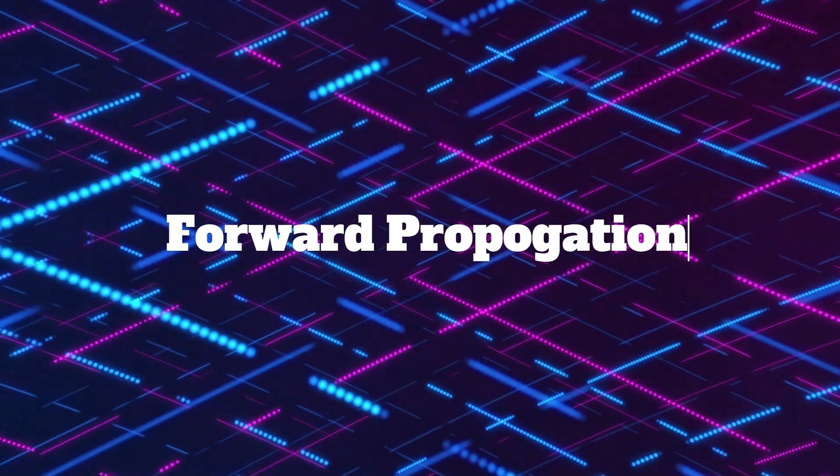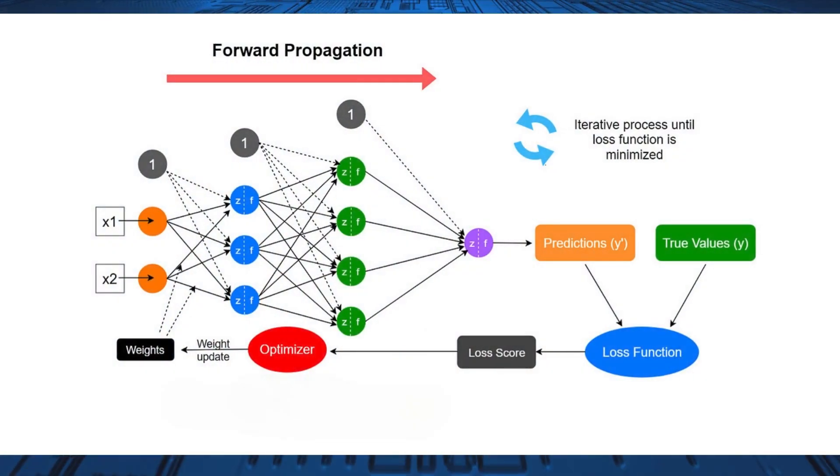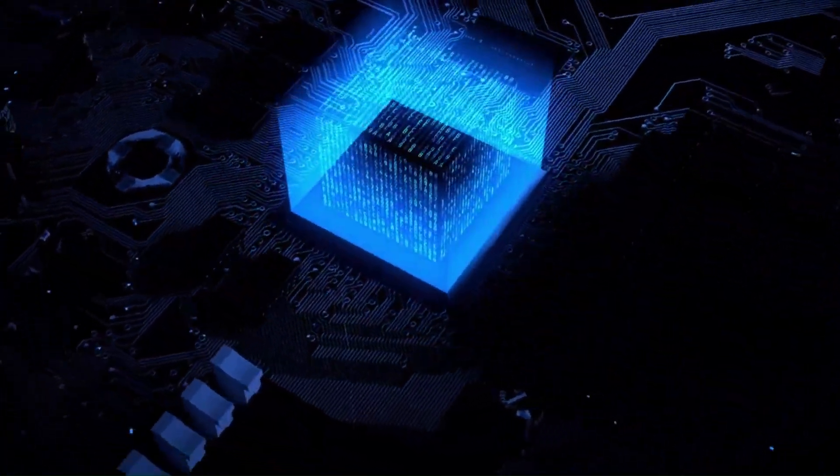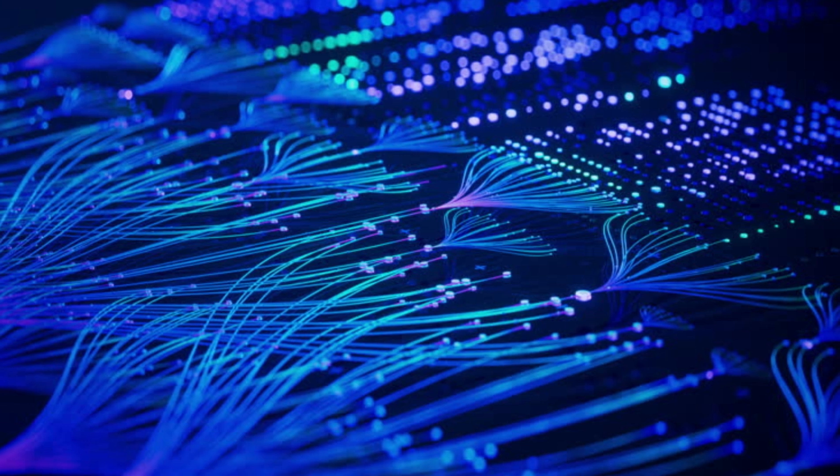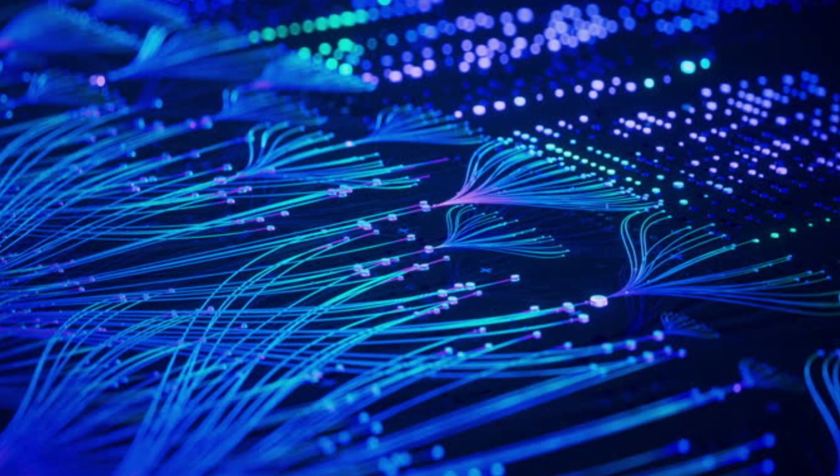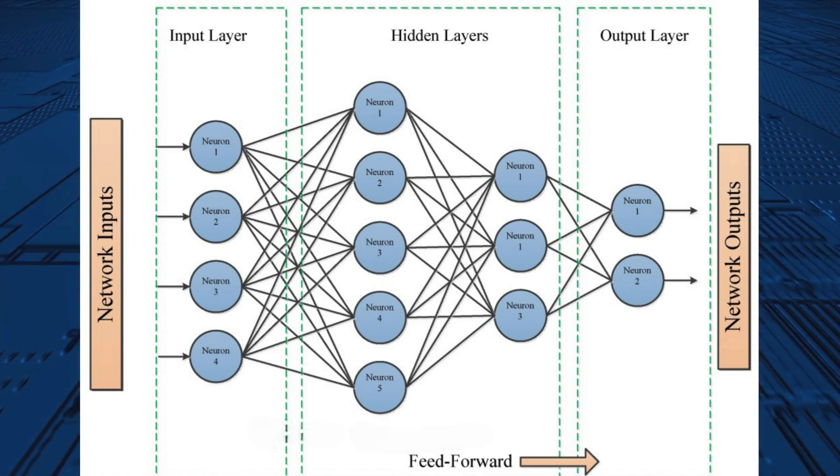During the training process, data is fed into the neural network through the input layer. The data passes through the network layer by layer, with each layer performing a transformation on the input data. This process is called forward propagation. The output of the final layer is the model's prediction or output.